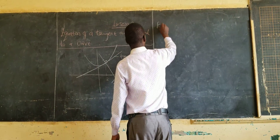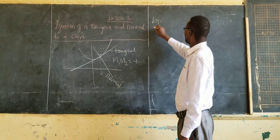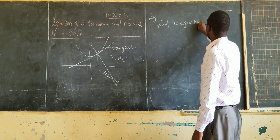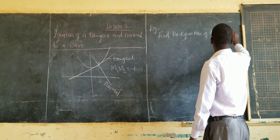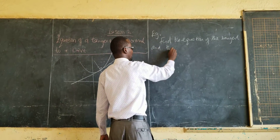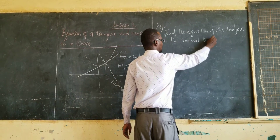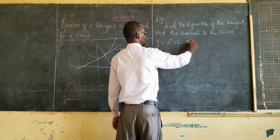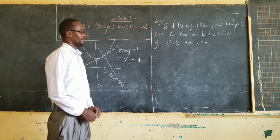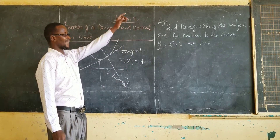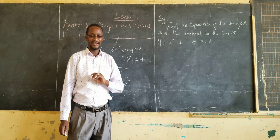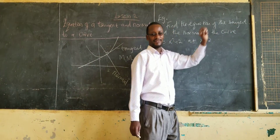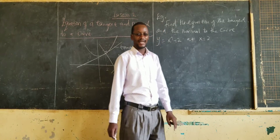Let's take an example. Find the equation of the tangent and the normal to the curve y equals x squared plus 2 at x equal to 2. The first thing we are going to do is to get the gradient function, or the derivative. The gradient function will give us the gradient of the tangent, and from the gradient of the tangent we can get the gradient of the normal.